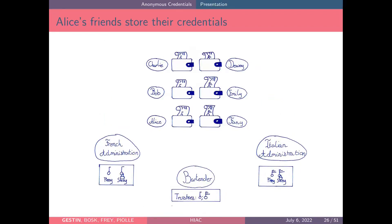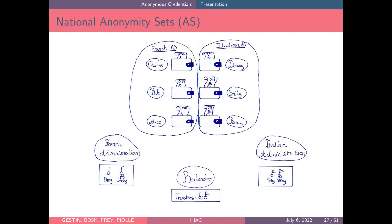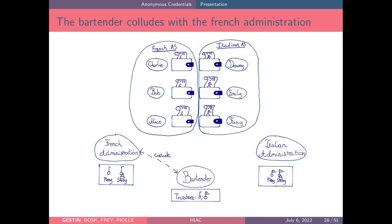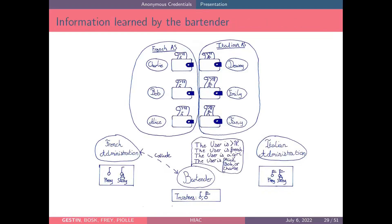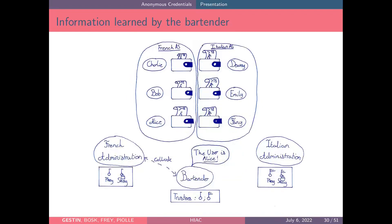From the bartender's point of view, if we assume there are only three citizens in France — Charlie, Bob, and Alice — and only three in Italy — Dewey, Emily, and Fanny — we have two anonymity sets: French citizens over 18 and Italian citizens over 18. If the bartender colludes with the French administration, he learns the user is over 18, is French, and is a girl. Since there is only one girl in that set, the bartender learns the user is Alice, and can then obtain all the information the French administration holds about Alice. This is not what we want with anonymous credentials.